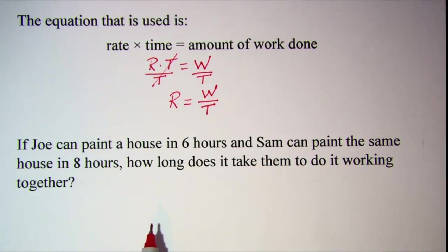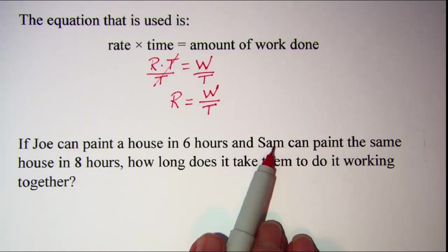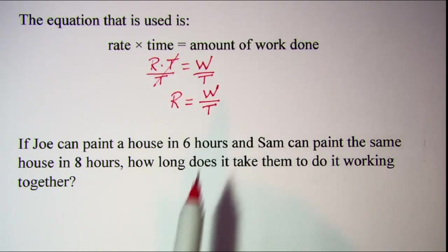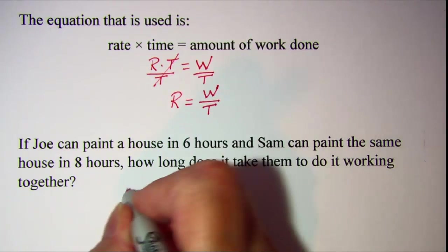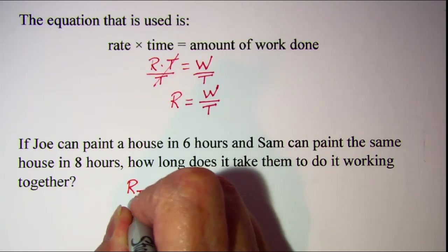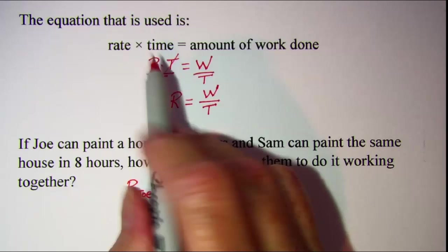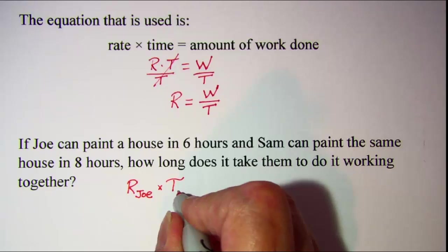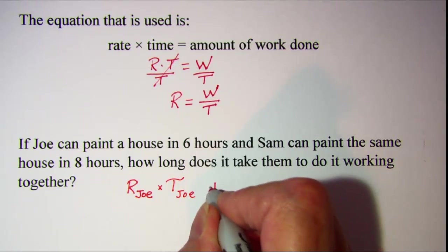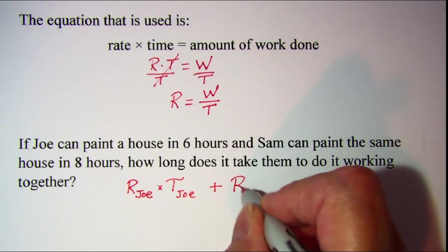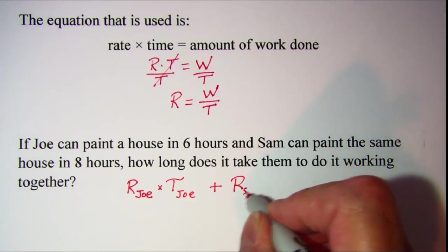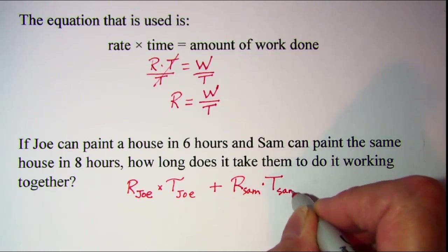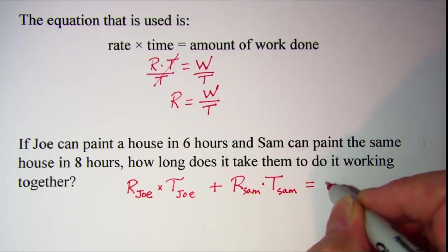So basically what we want to do is combine these two workers and write an equation for the amount of work they can get done. So what we want is the rate for Joe times the time for Joe added to the rate for Sam times the time for Sam, and that'll give us the total work done.